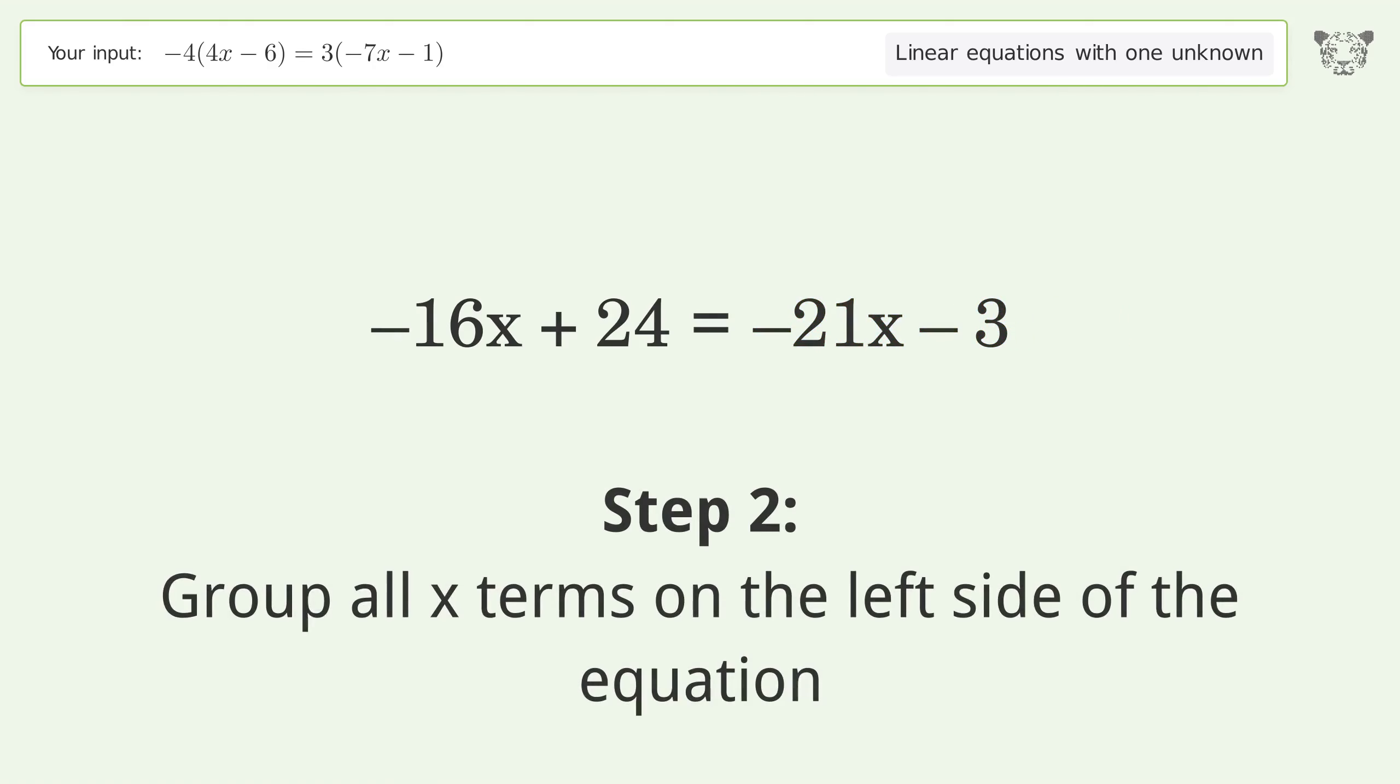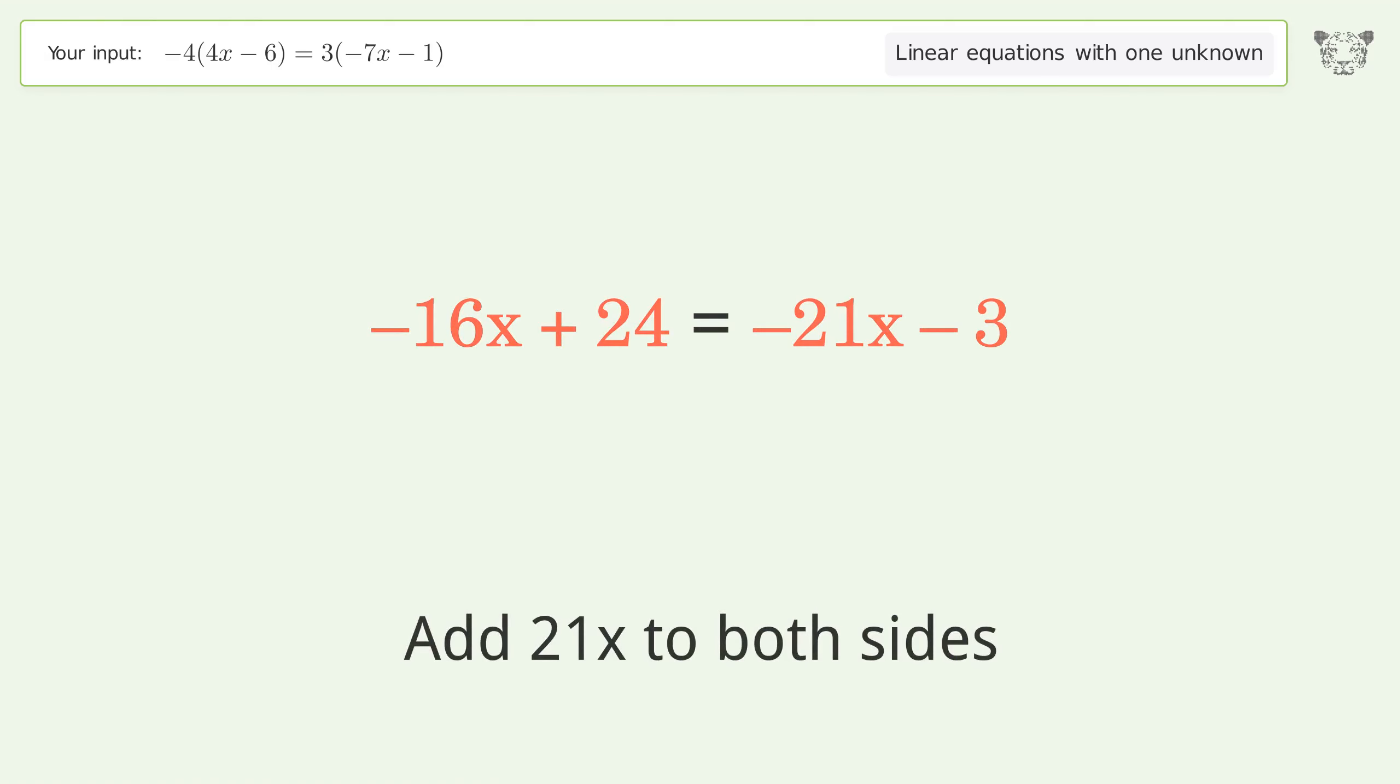Group all x terms on the left side of the equation. Add 21x to both sides. Group like terms.